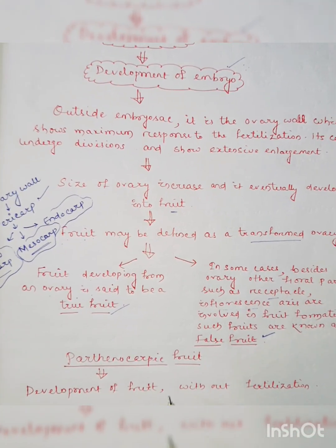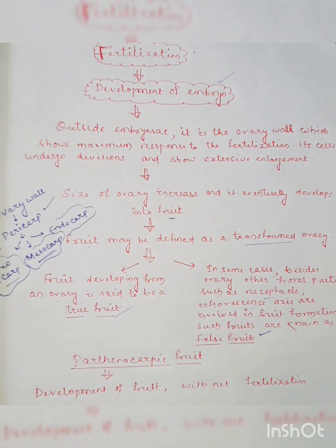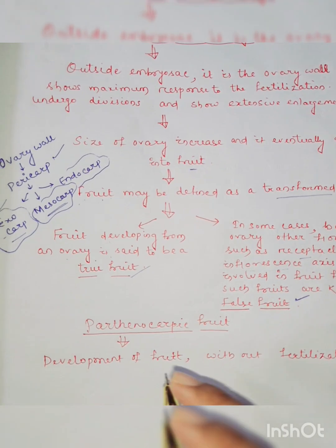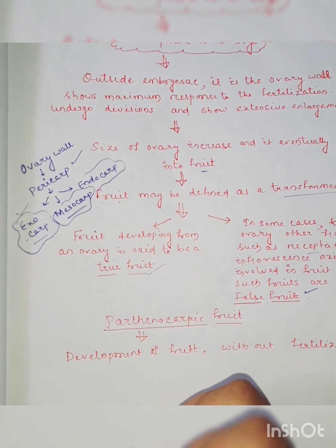And some fruits are called as parthenocarpic fruit where the development of fruit occurs without fertilization. Can you give me some examples of this parthenocarpic fruit?